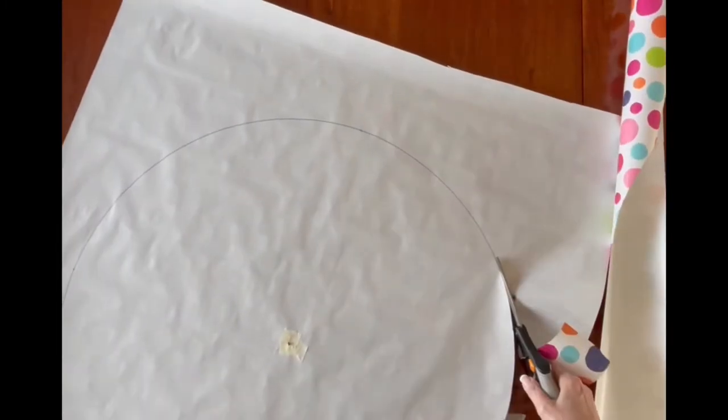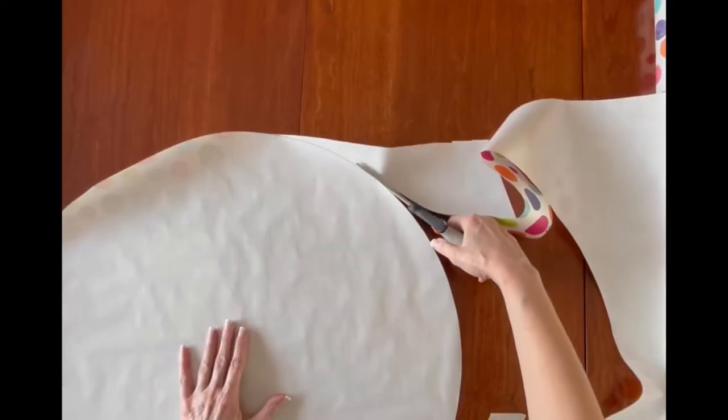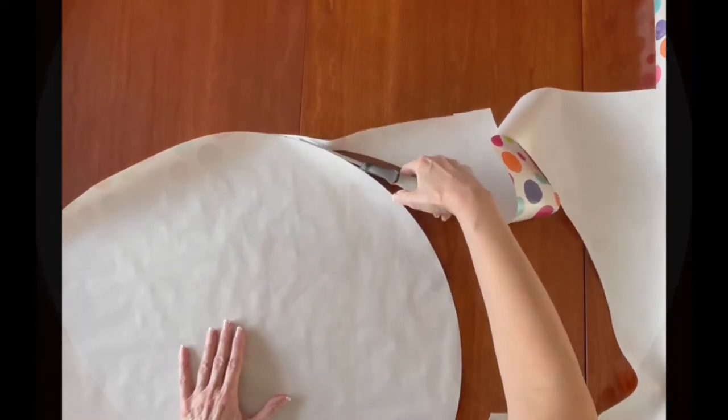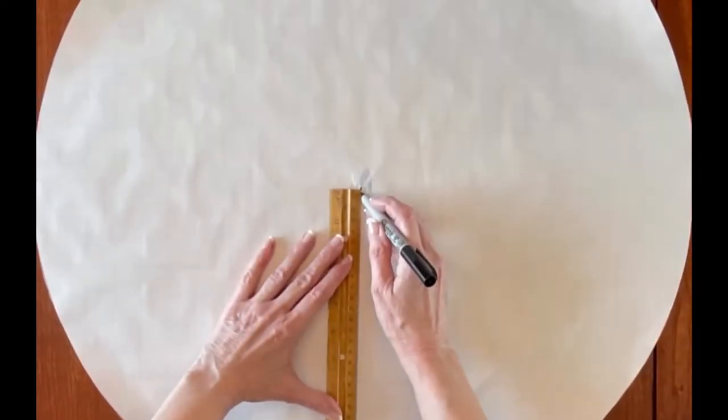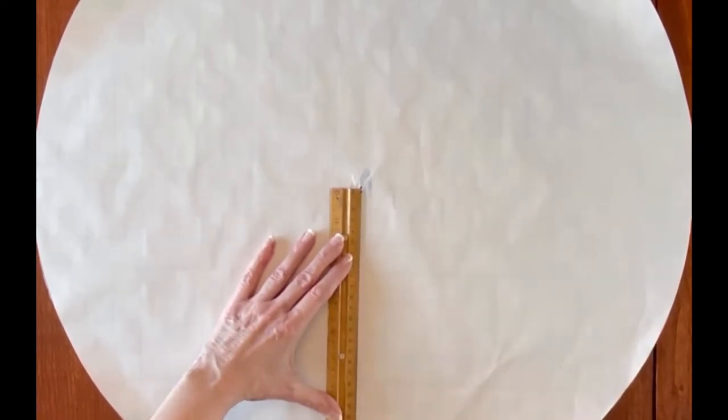Guys, I went through a lot of wrapping paper with all the mistakes I made. I'm glad it was only Dollar Tree. Mark off a quarter section of your circle. We're going to copy this to use as a template for making the numbers.